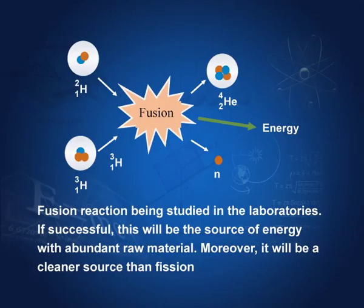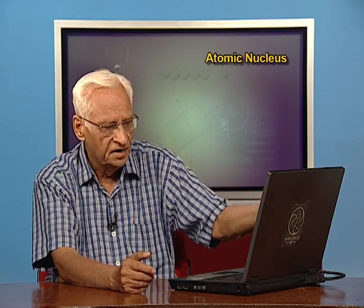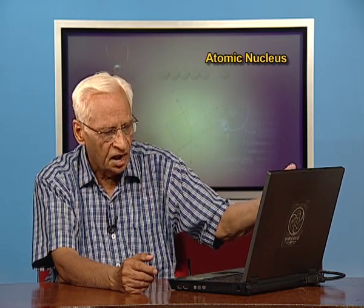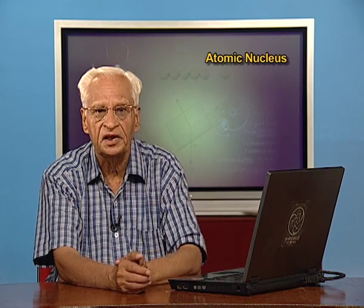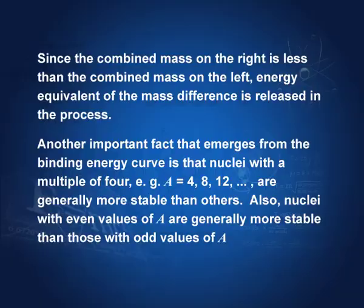You need hydrogen-2 (deuterium) and hydrogen-3 (tritium) to work. Since the combined mass of the products on the right is less than the combined mass of the reactants on the left, the energy equivalent of the mass difference is released. An animation of this process can be found on the referenced website.